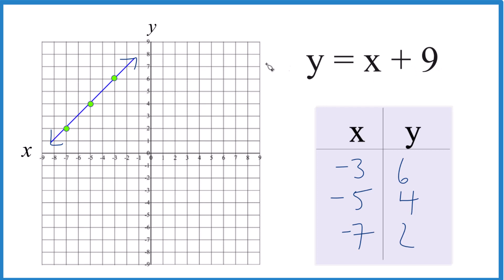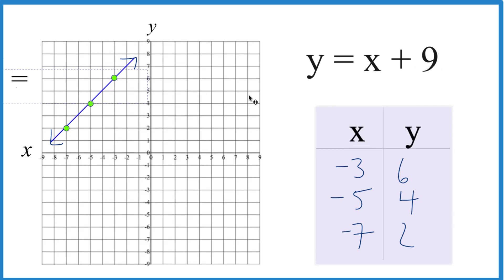You could also use slope-intercept form to do this. That works just as well. You'll get the same graph, same line here. That's it. This is Dr. B graphing y equals x plus 9. Thanks for watching.